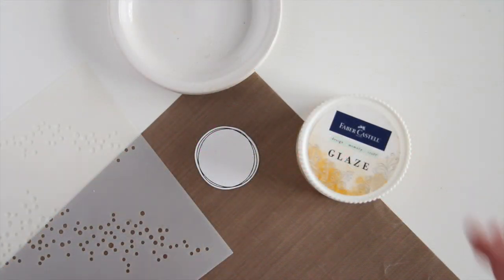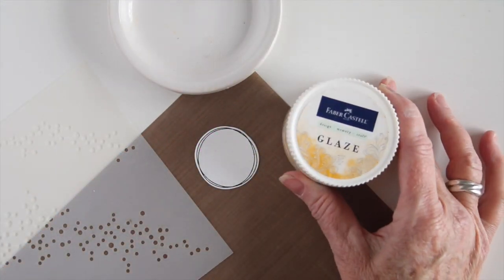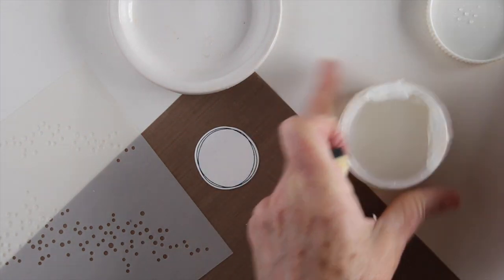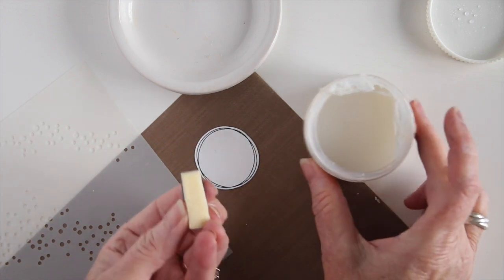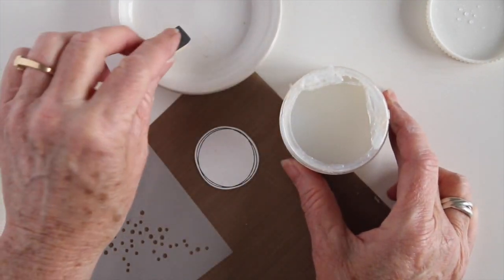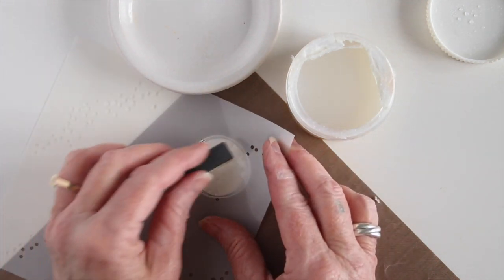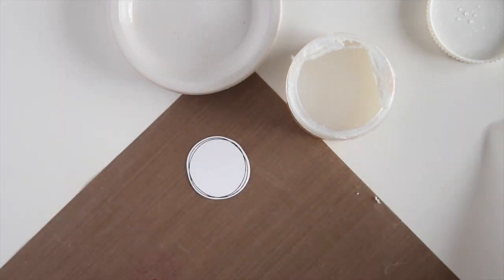There are some really great multi-medium products that work as a resist and this is a Faber-Castell glaze. This is a real liquid form and how I use this is I take a cut and dry foam piece, go ahead and dip it in and then I use a saucer or a plate to kind of diffuse that or lighten it up. And then I use it through my stencil.